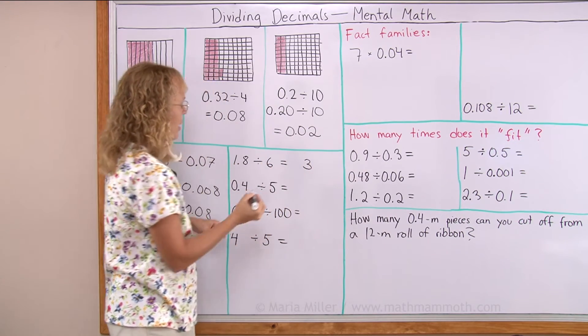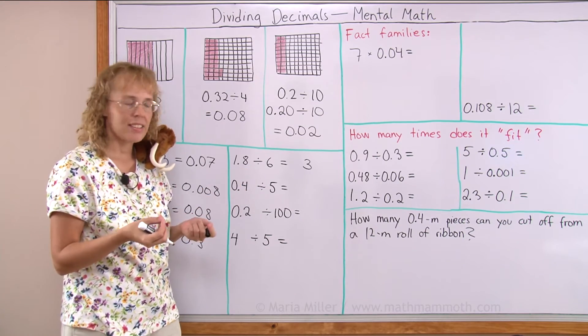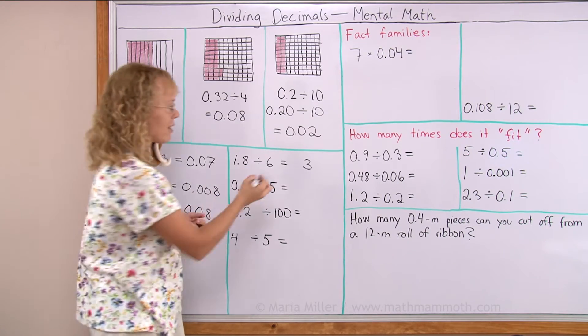Here looks like almost as if we had eighteen divided by six equals three, right? But this is actually one and eight tenths, or eighteen tenths. So the answer will be three tenths.